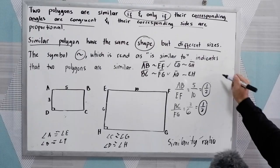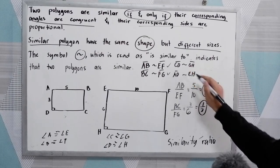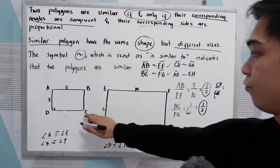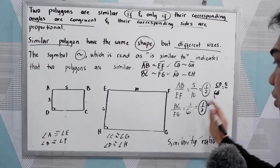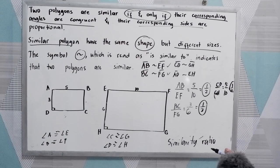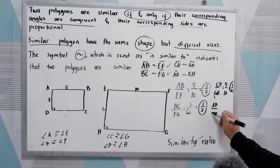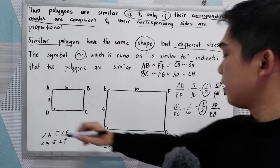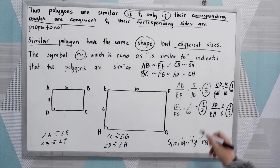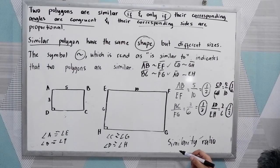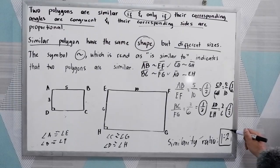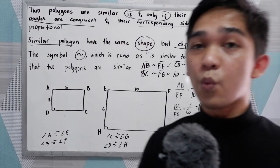CD over GH: CD is 5, GH is 10, reduced to 1/2. And AD over EH: AD is 3, EH is 6, that is also 1/2. So all four ratios are 1/2, which is our similarity ratio. That is equivalent to 1 is to 2. Our similarity ratio is 1 is to 2.